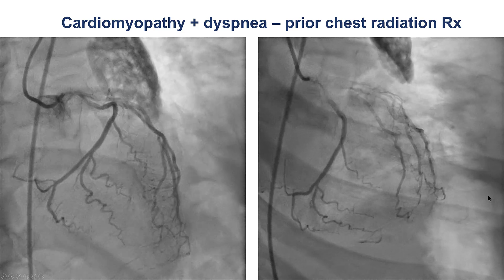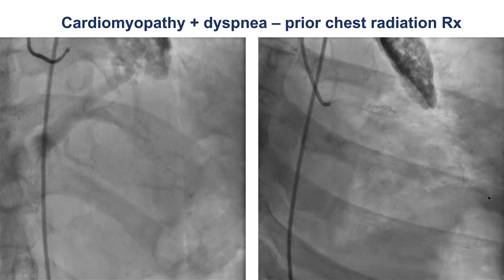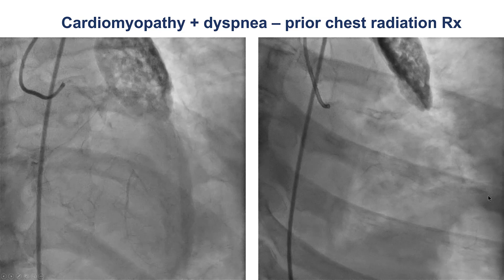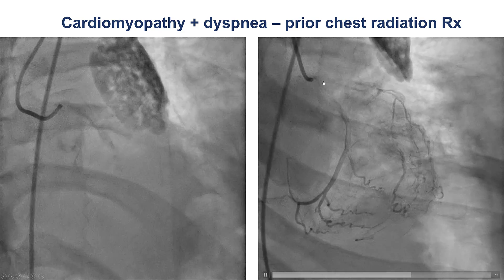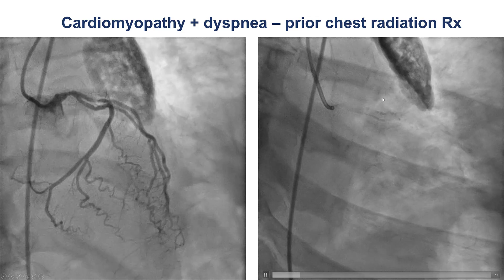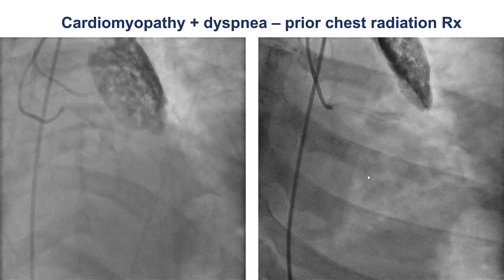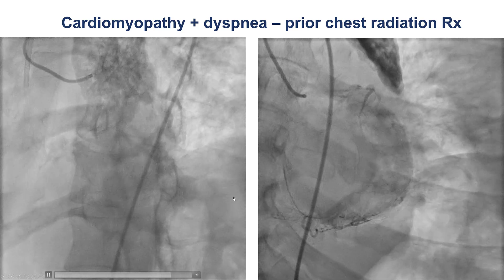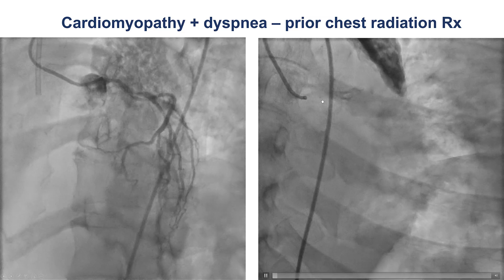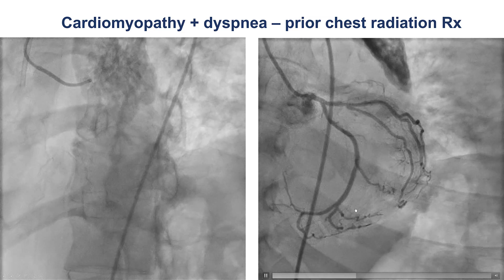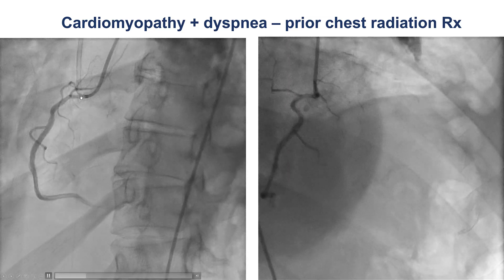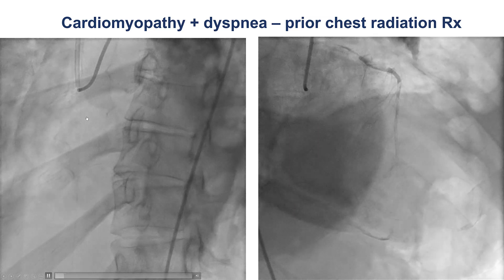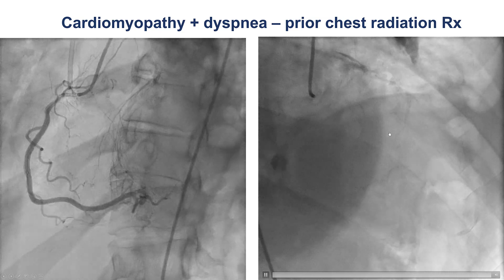The patient had previous radiation therapy of the chest for cancer and presented with dyspnea. She was found to have a cardiomyopathy, and coronary angiography demonstrated an ostial occlusion of the left anterior descending artery with heavy calcification. Different views demonstrate some filling in the LAD territory via ipsilateral collaterals. There is mild to moderate disease in the circumflex, and there was also a significant ostial lesion of the right coronary artery with dampening of pressure upon engagement, and with septal collaterals from the right filling the LAD.